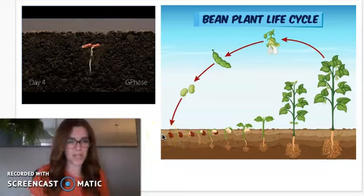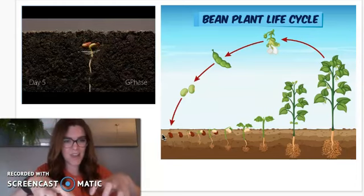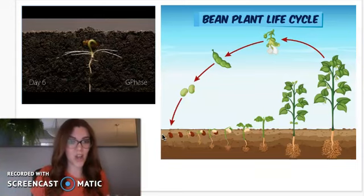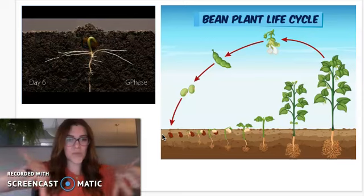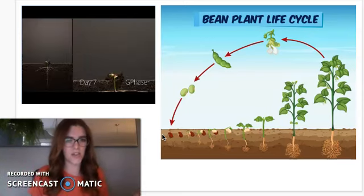It doesn't matter which way you plant the seed, the roots will always know to start growing down. And they're growing down to create that anchor and to start collecting nutrients from the soil. And as you can see, roots need a lot of space because they start to grow outwards and they don't want to get entangled in any of the other plants.